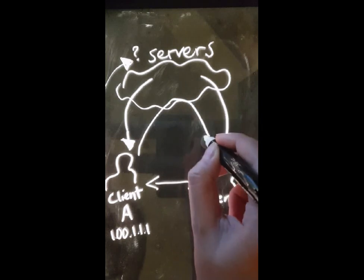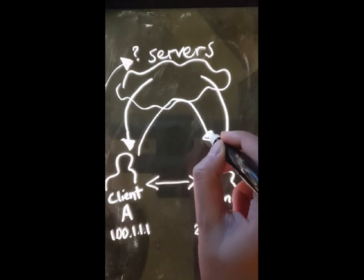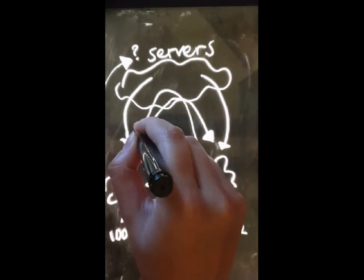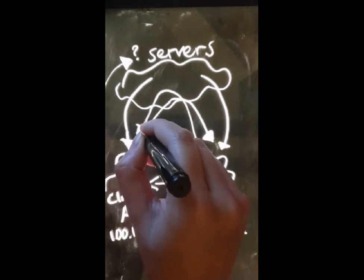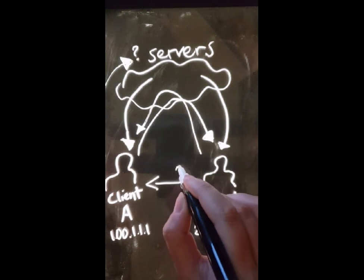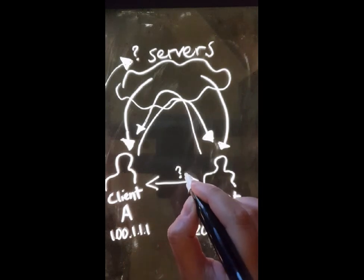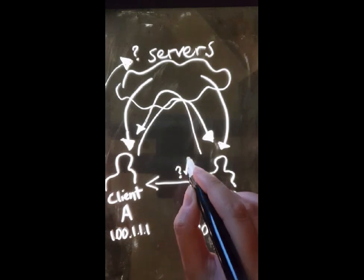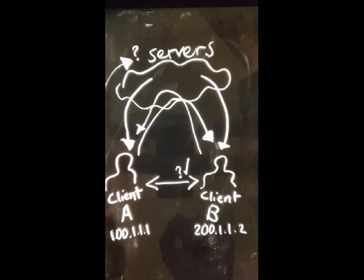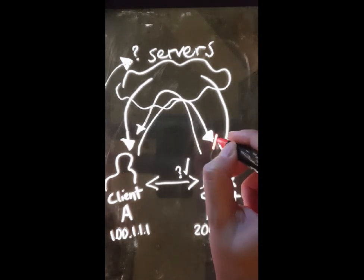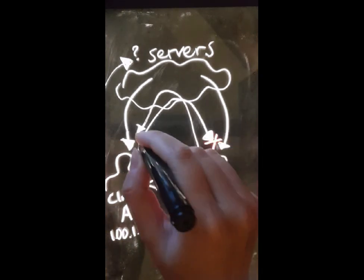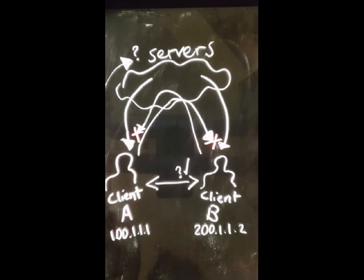A and B now know the endpoints and have the possibility of sending data to each other. A will send UDP packets to B, meaning A will send packets to both the private and the public IP address of B. When one of the receiving IP addresses receives the packets, it will send a response to A.